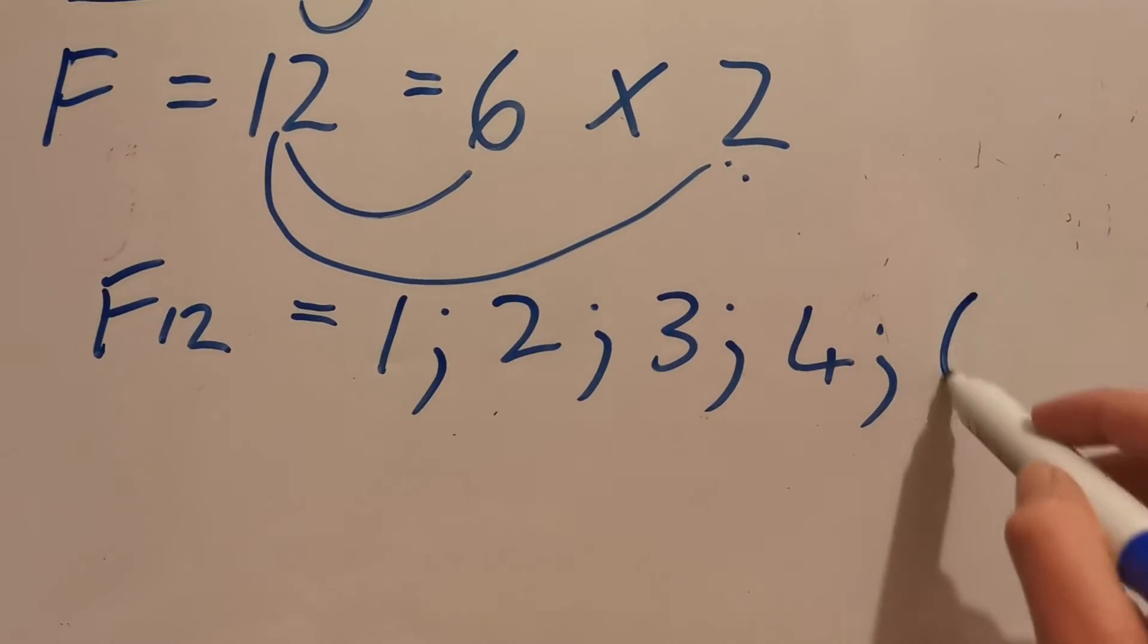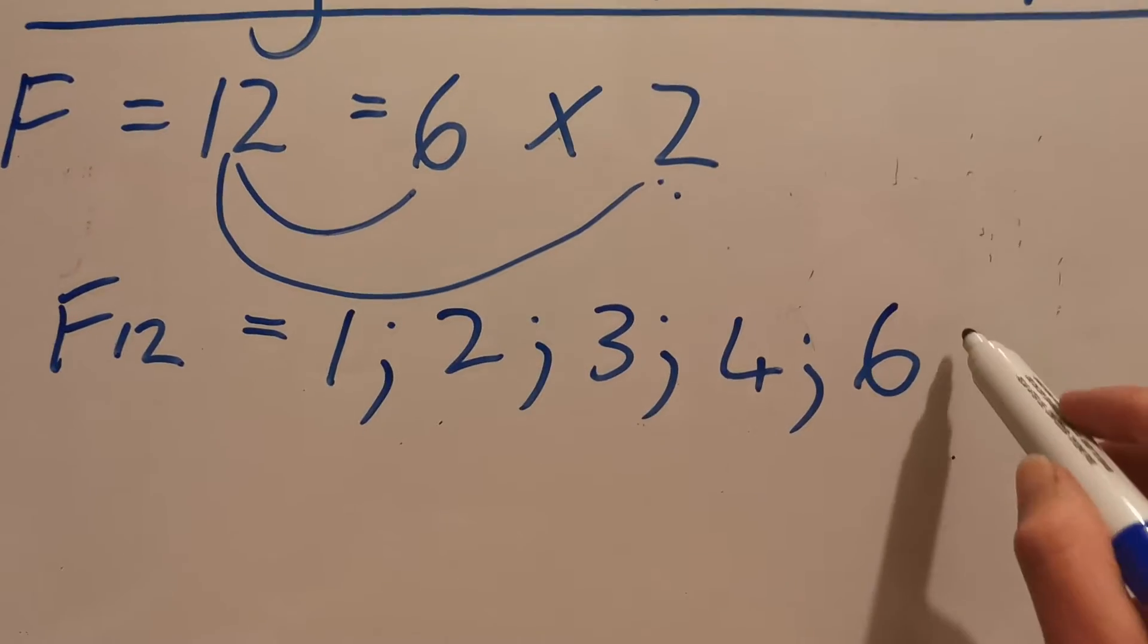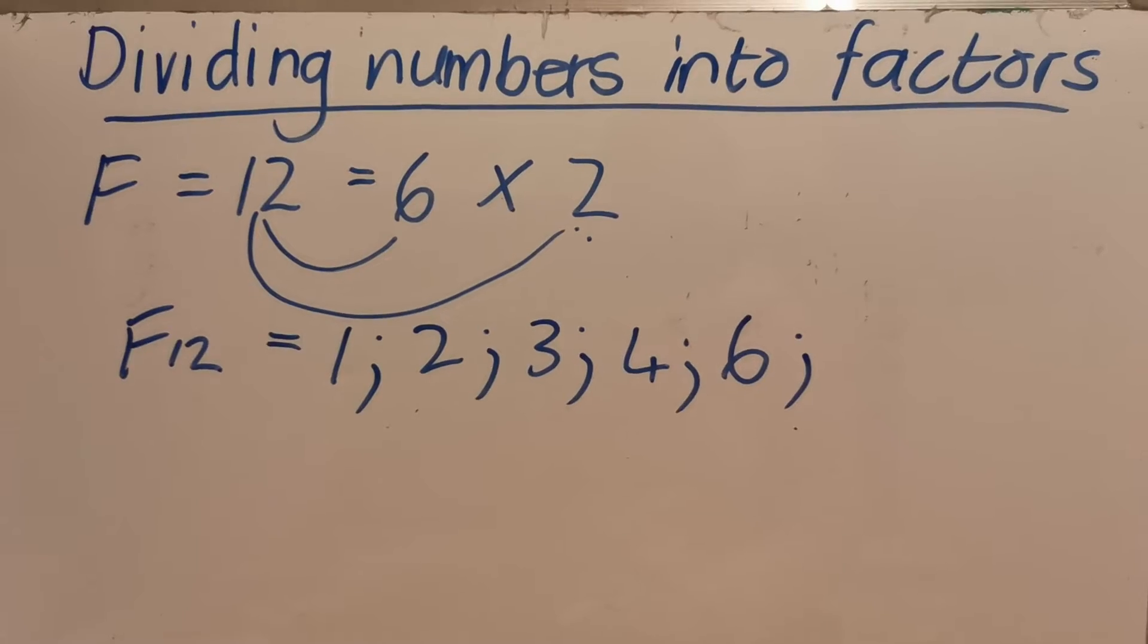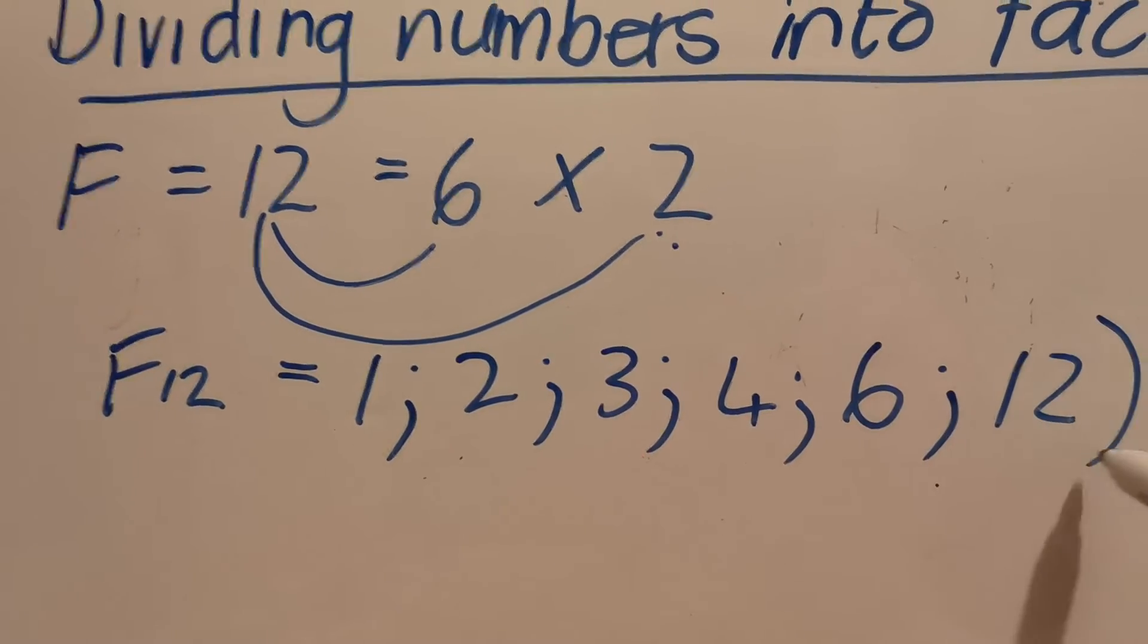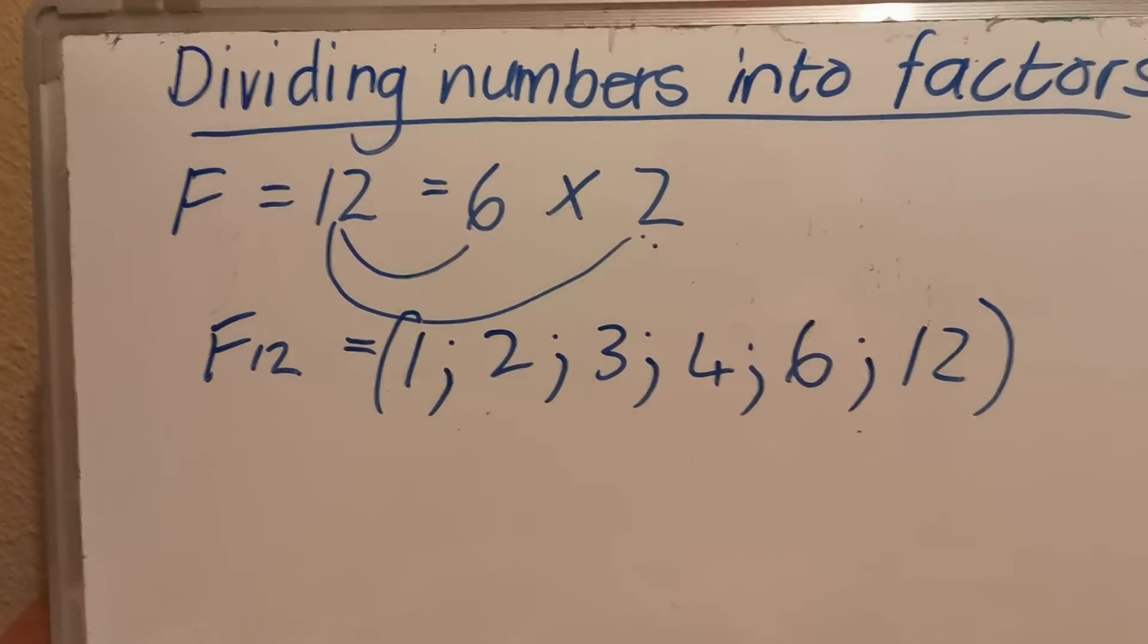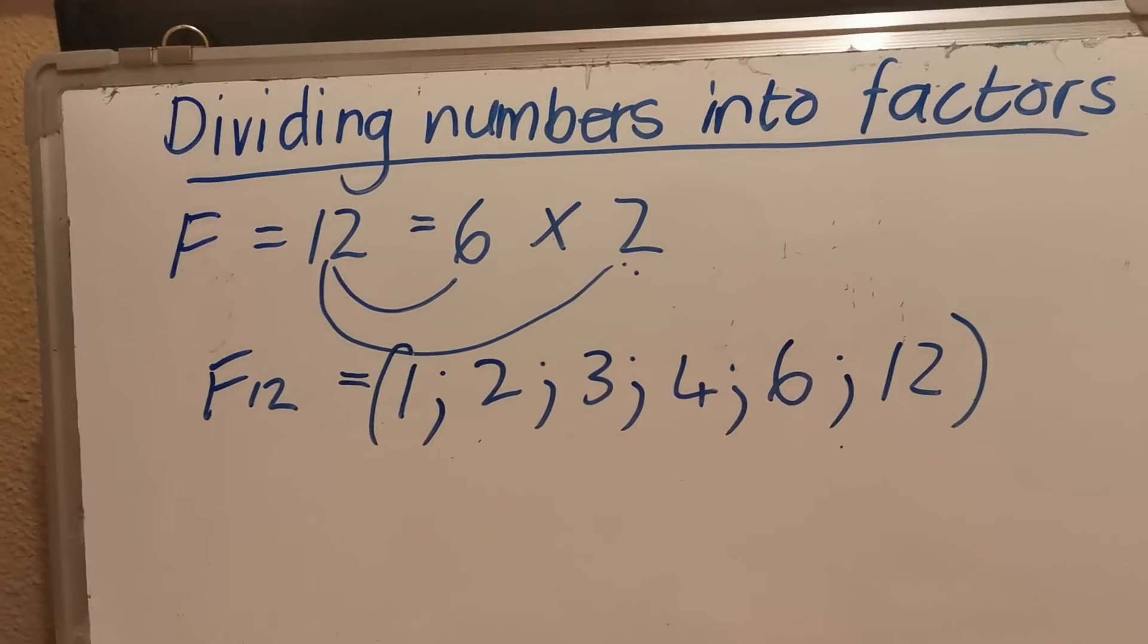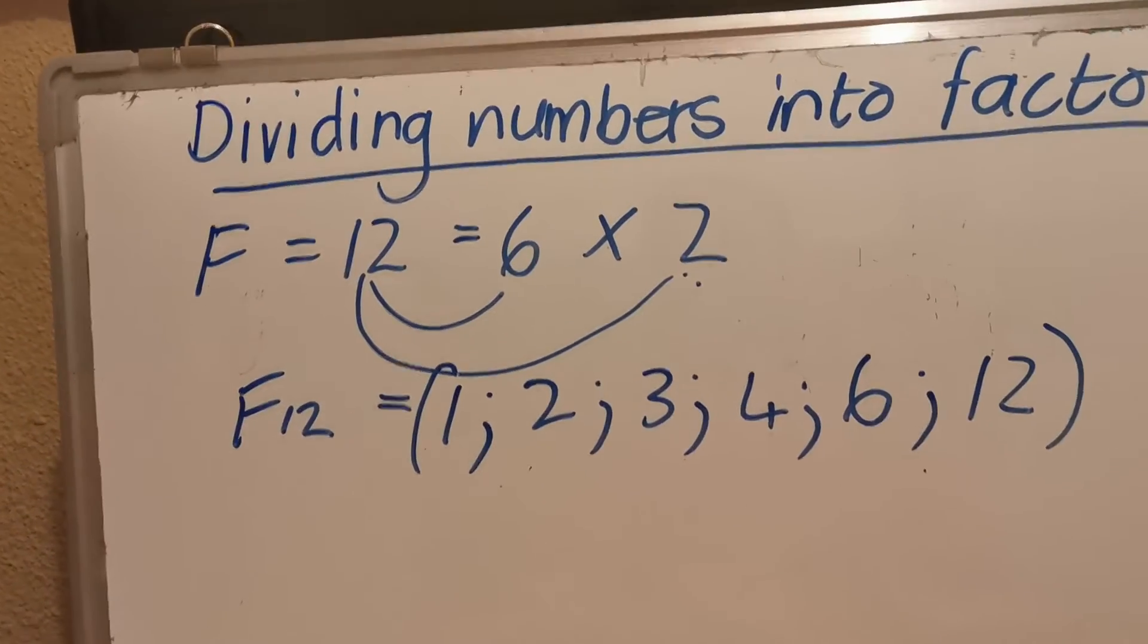So you'll skip 5 and you'll go 6 because 12 divided by 6 gives you... 7, 8, 9, 10, 11 will not be factors of 12 because it will give you a remainder. So the last factor of 12 will be 12. So all the factors of 12 is 1, 2, 3, 4, 6, and 12 because all those numbers can be divided into 12 without any remainder.